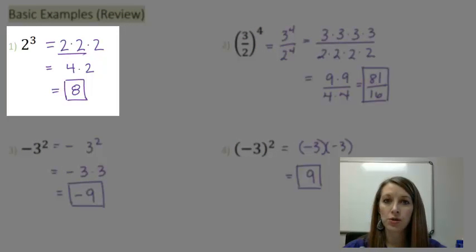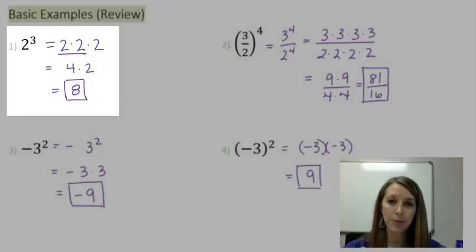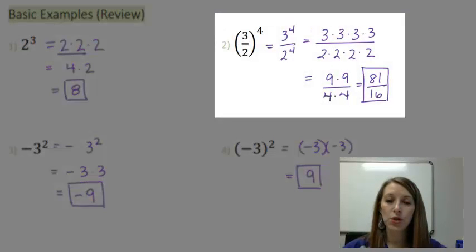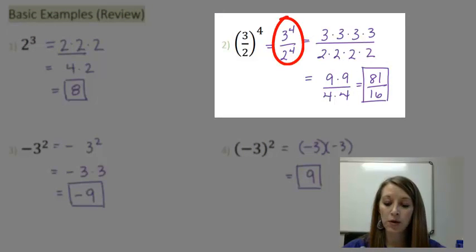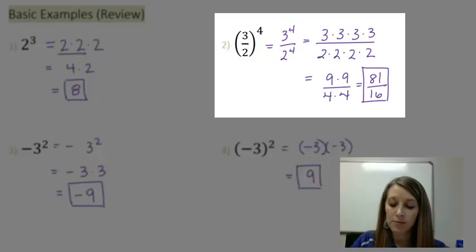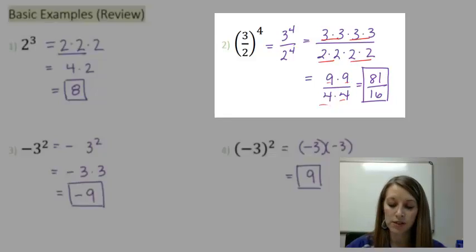So I have each of these worked out here. In example one, just two to the third, two times itself three times, works out to be eight. In example two, we have a fraction to the exponent. We know that we can take each of those pieces to the exponent, so that gives me three times itself four times. Multiply that out, I took two and multiplied each two by themselves, which gives you this here. And multiplying everything else straight across gives us 81 over 16.